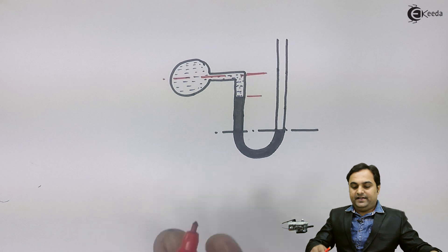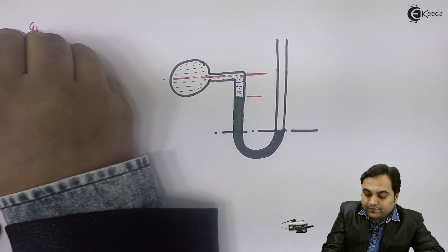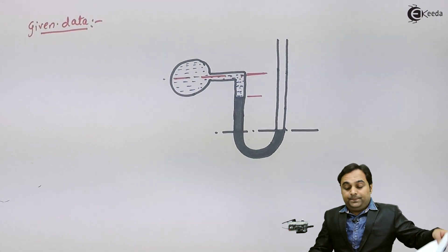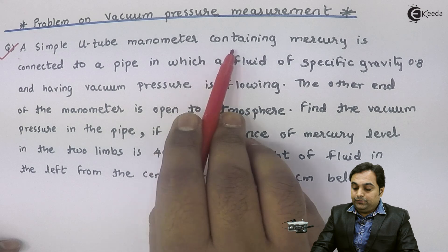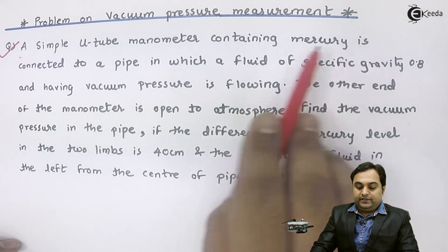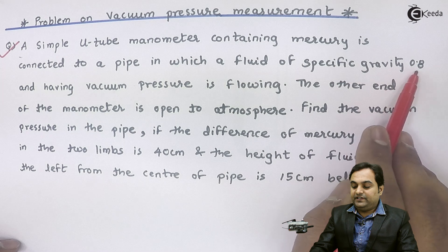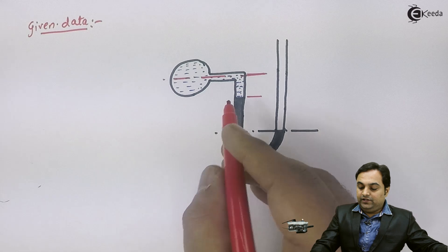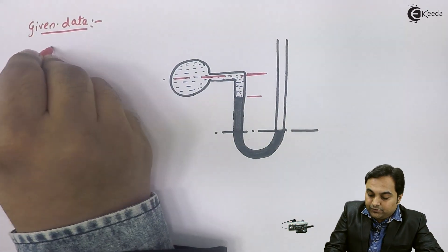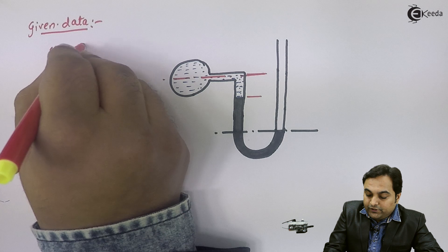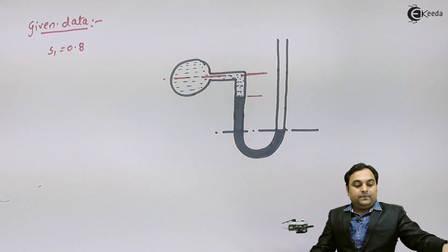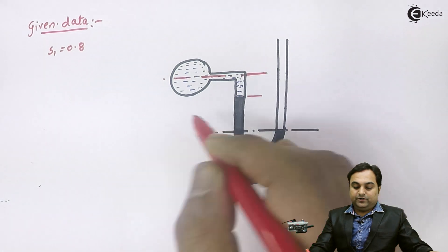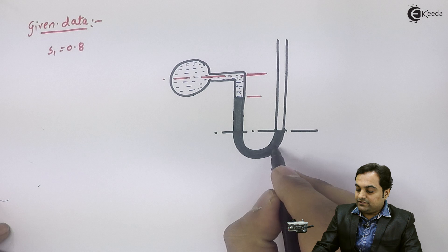The question is: a simple U-tube manometer containing mercury is connected to a pipe in which fluid of specific gravity 0.8 and having vacuum pressure is flowing. So the specific gravity of the fluid, I'll denote it by S1, it is equal to 0.8. It is flowing inside this pipeline, and the heavier liquid is mercury, shown in black here.